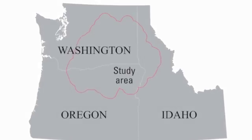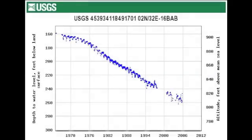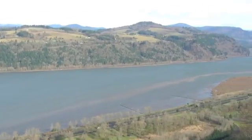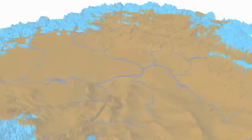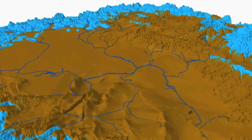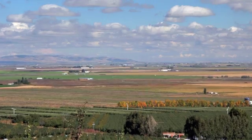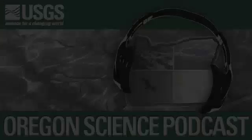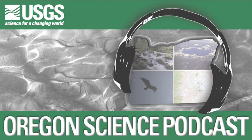USGS hydrologist Eric Burns describes how his team modeled a 53,000 square mile plateau, how this information is currently used, and what implications it has for the future. Join us as we explore how cutting-edge science today is used to solve tomorrow's problems, only in this month's episode of the Oregon Science Podcast.